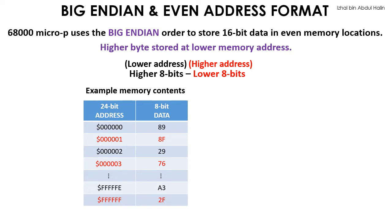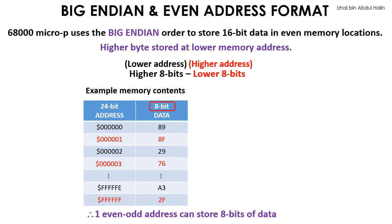The address is 24 bits wide, shown from 0 to FFFFF. Note that even address values are written in black while odd addresses are in red — this will aid in explaining data organization using the even memory address format. The data size is 8 bits. At address 0, the corresponding data value is 89; at address 1, the value is 8F; at address 2, the value is 29, and so on. Each address location can store 1 byte of data, and the addresses increment sequentially.